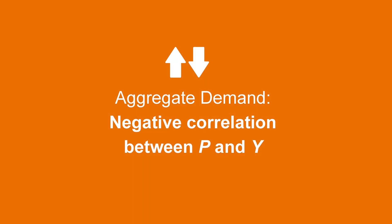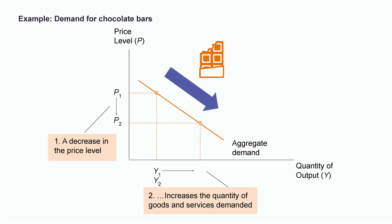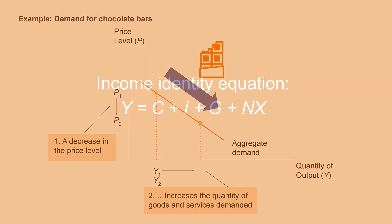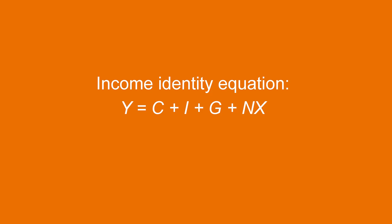The negative slope of the aggregate demand curve tells us that there is a negative correlation between the two variables, meaning that as the general price level declines, the economy's demand for goods and services increases. Is this relationship intuitive? Let's consider the demand of a single good first, say a chocolate bar. If a chocolate bar becomes cheaper, would you want more of it? I certainly would. Hence, when the price goes down, demand goes up. The negative relationship between price and quantity demanded should feel intuitive. But we have to consider the entire economy's goods and services now, rather than just a single good.